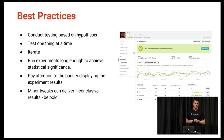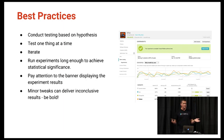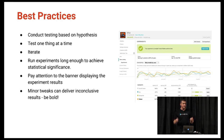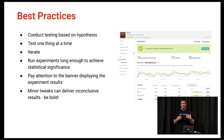Developers have been asking us for best practices. Here are some things to consider when running your experiments: start with a hypothesis, then test it. Test one thing at a time. Iterate. Run the test long enough to get statistical significance — you don't want to cut it off too short. And pay attention to the banner in the dev console, which gives you your results.